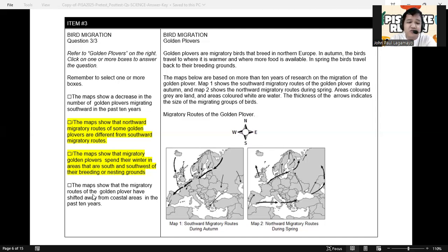Next option is the maps show that migratory routes of the golden plover have shifted away from coastal areas in the past 10 years. So they have not specified here in our maps about the past 10 years. So definitely, this option is still considered as incorrect.